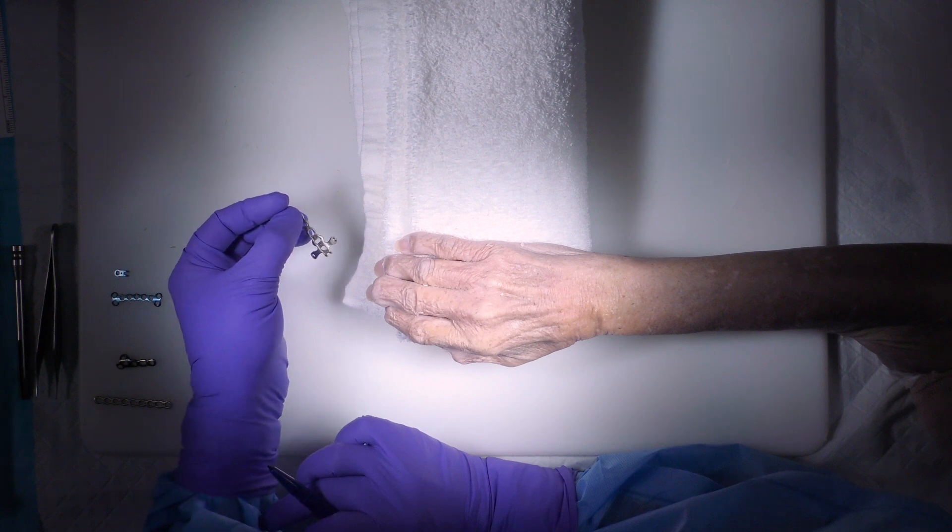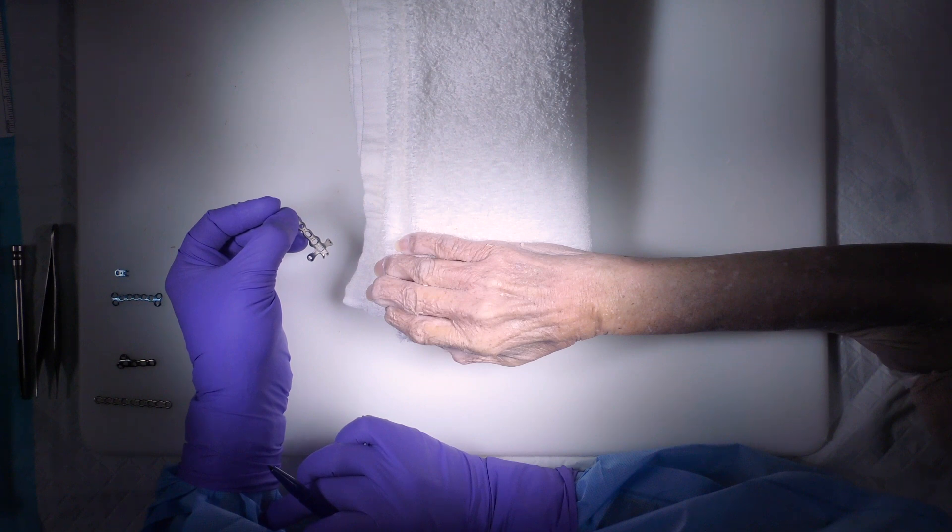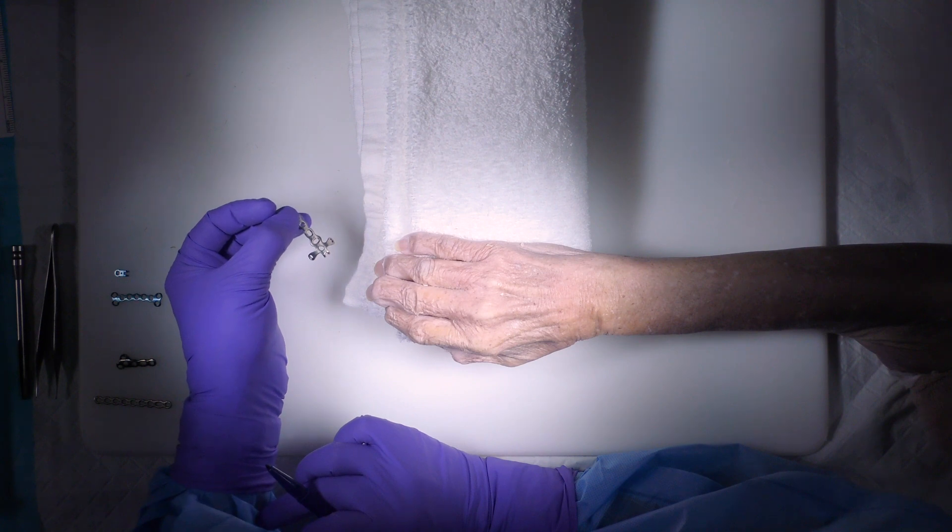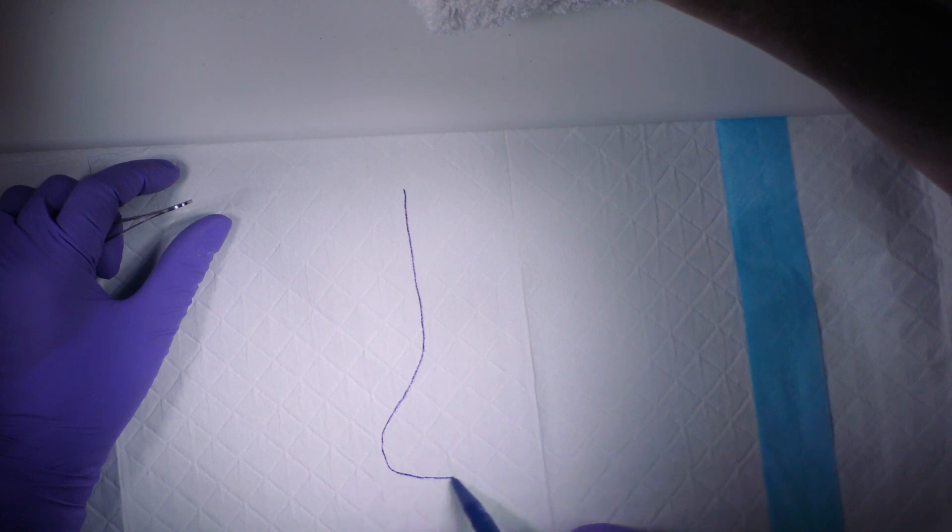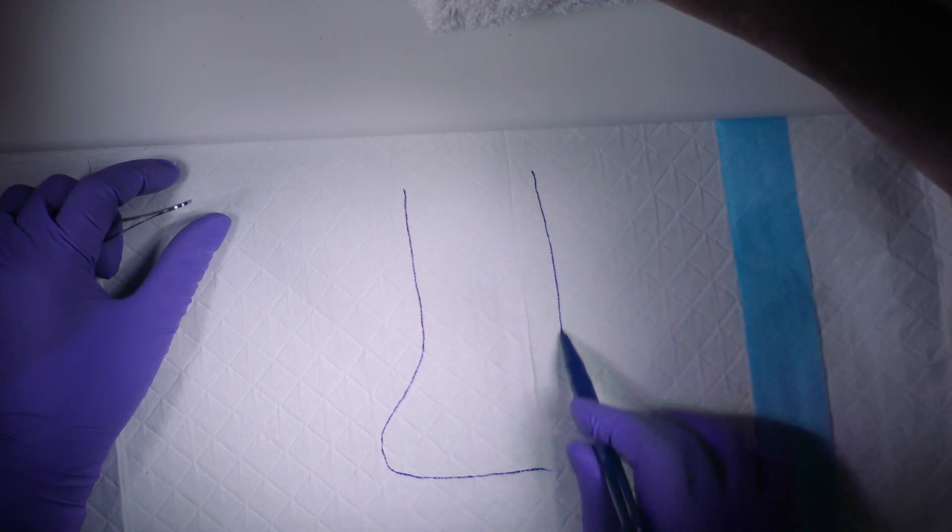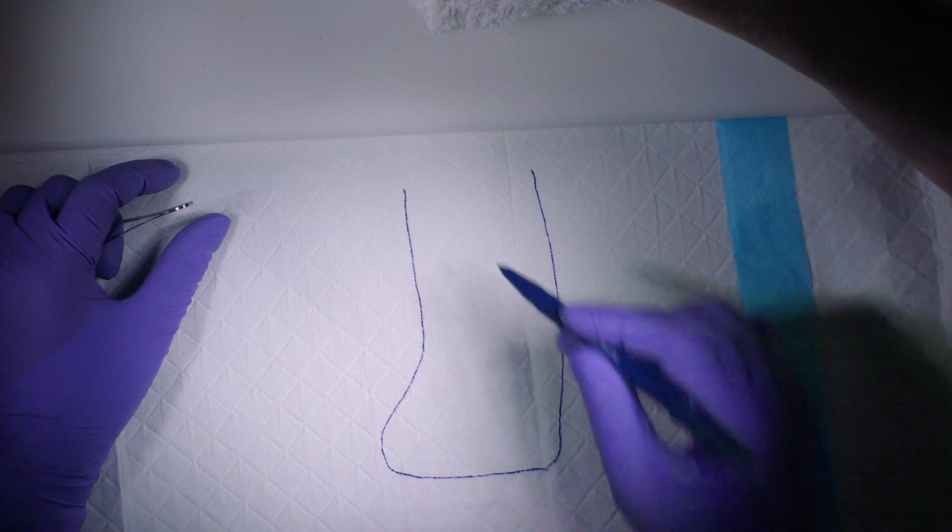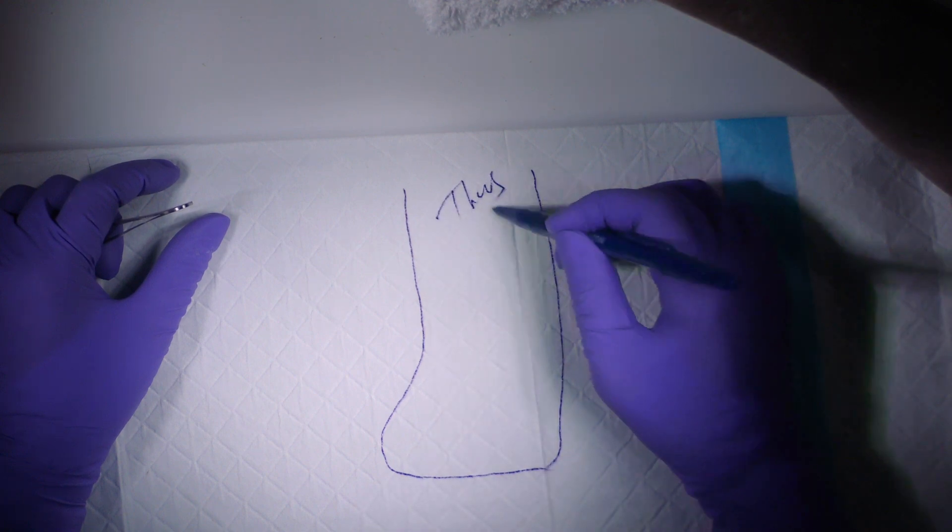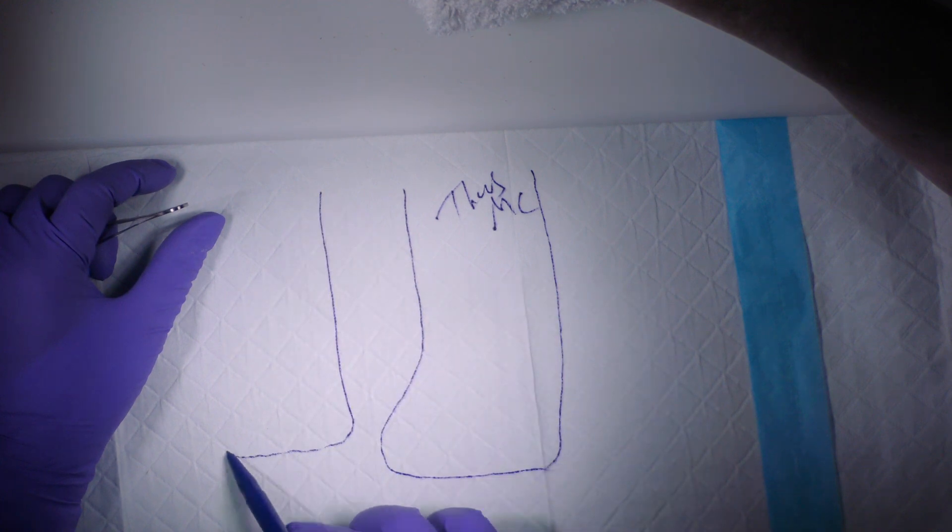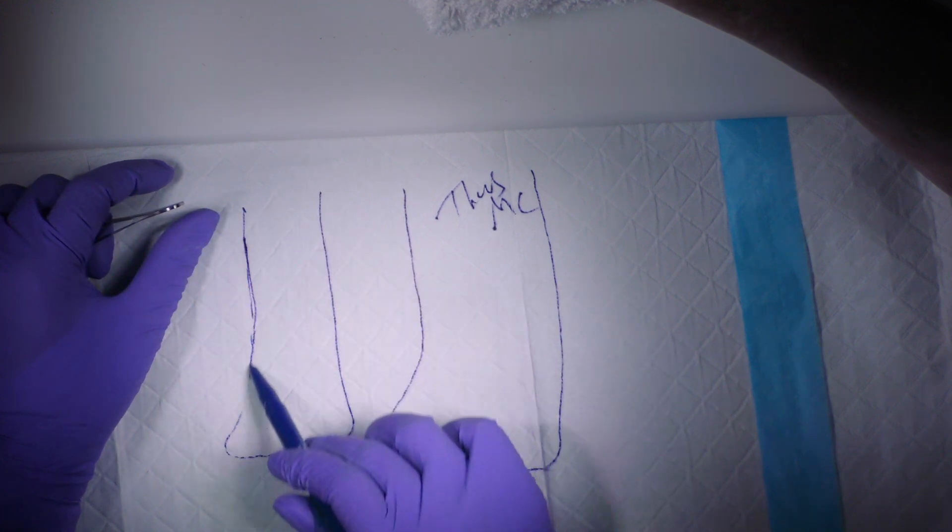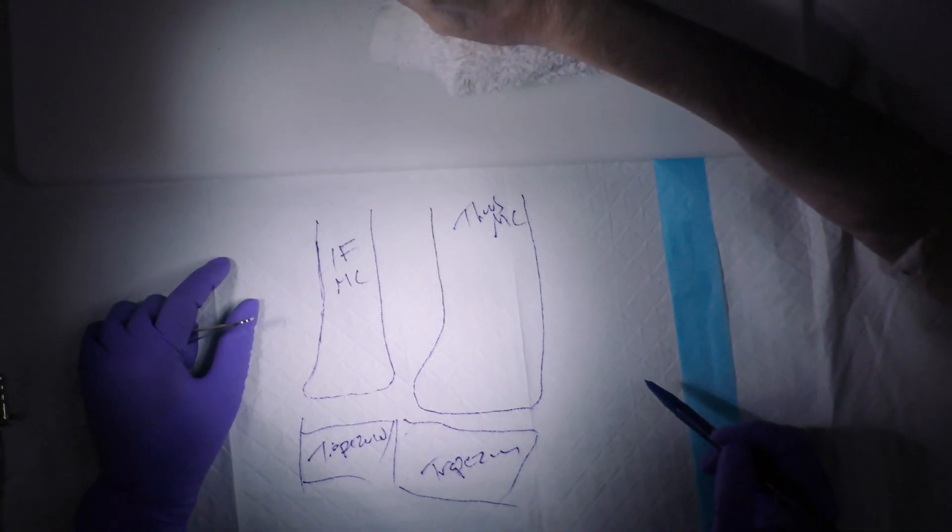We have to almost always treat these operatively because of their inherent instability and displacement due to unopposed pull of various tendons, primarily the APL tendon. When looking at the thumb metacarpal anteriorly or the volar side of it, the thumb metacarpal is positioned with the index metacarpal slightly higher and ulnar to it.